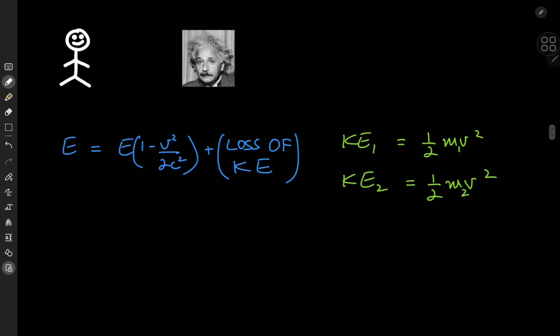Now let's try to piece together all this information. So we have E equal to E minus v squared by 2c squared times E plus a loss of kinetic energy which would be KE1 minus KE2.